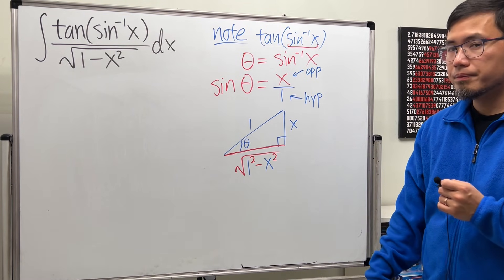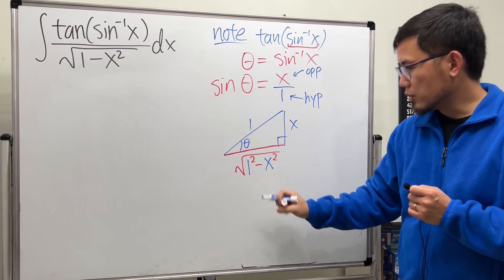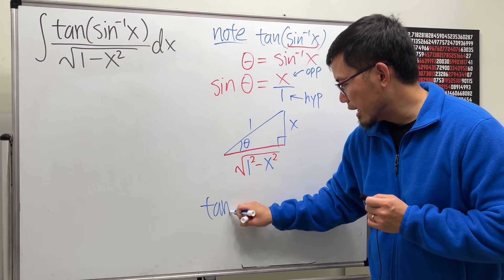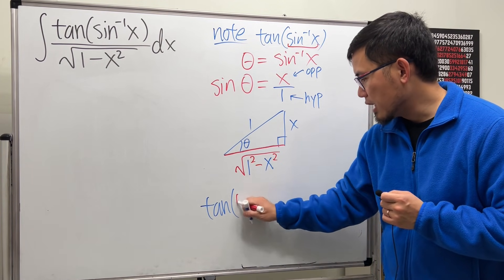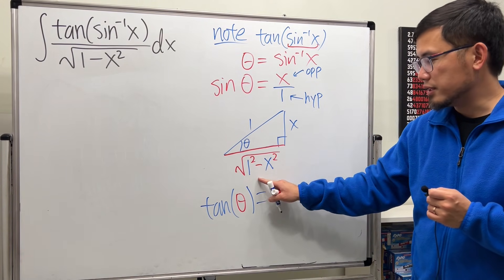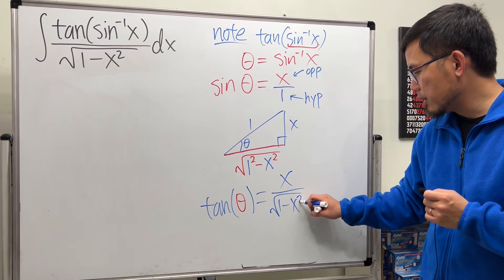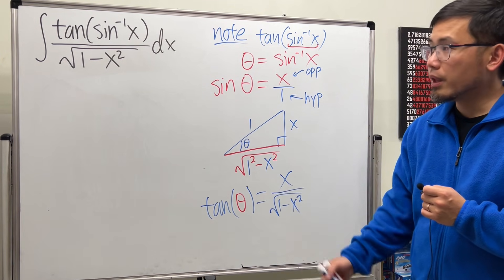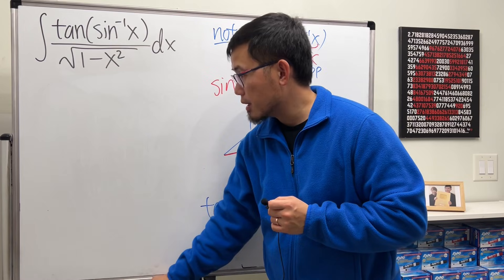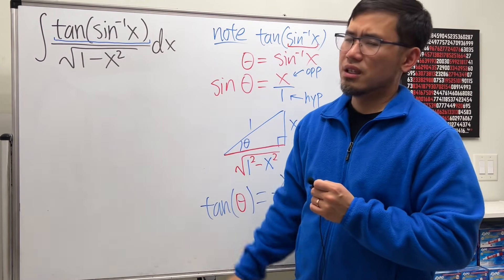So you can work that out. And then once you look at this triangle, we're trying to figure out tangent of the angle. So as you can see, tangent of the angle theta is just going to be opposite over adjacent, which is just x over square root of 1 minus x squared. One squared is one. So now let's go back there. Instead of looking at the tangent of inverse sine x, let's change that.